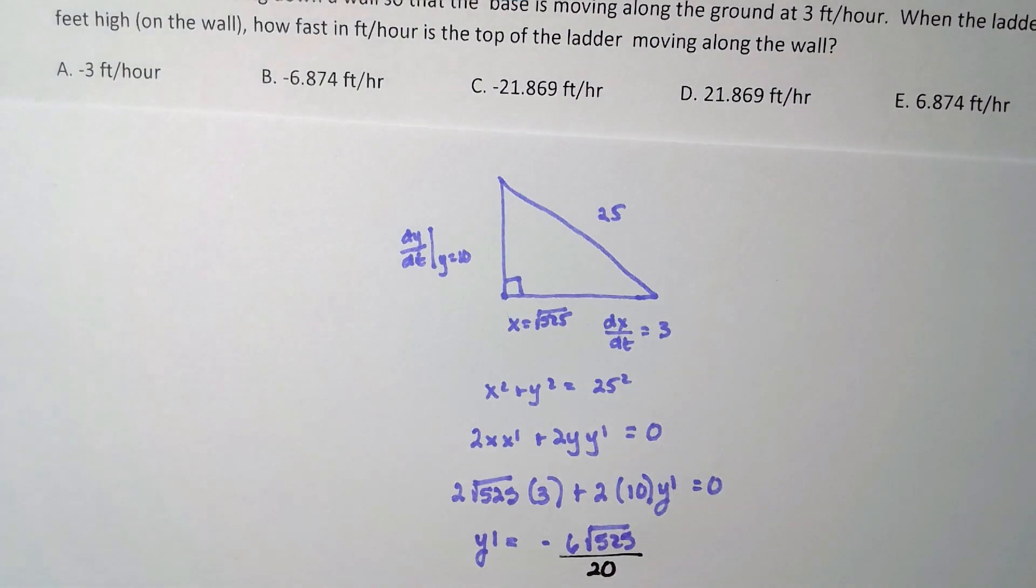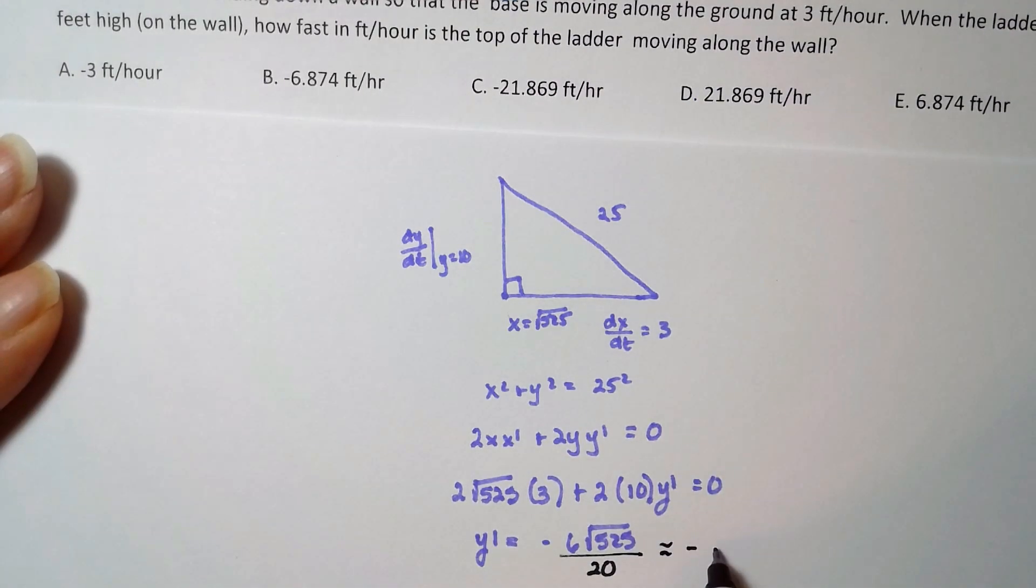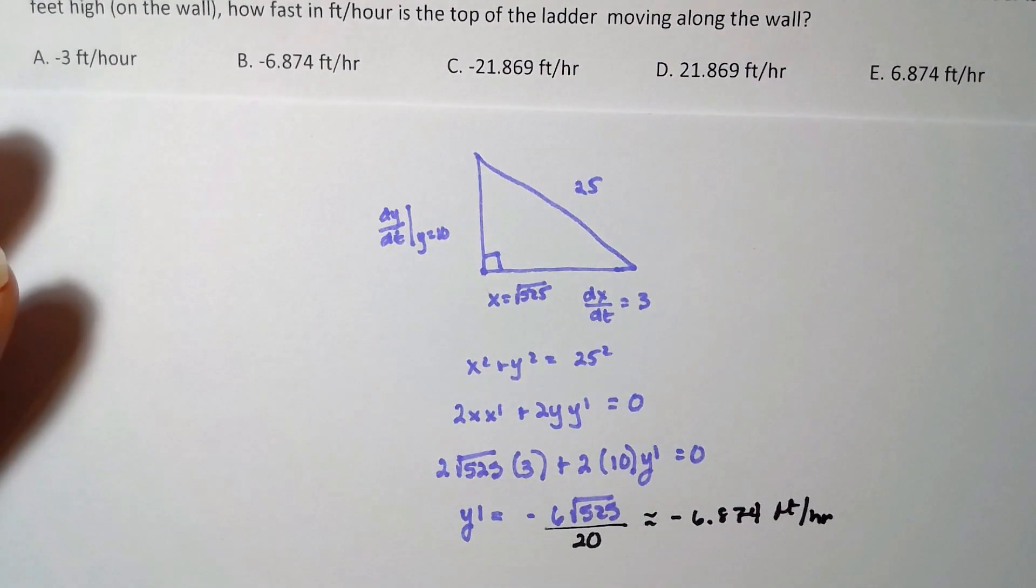Looks like I'm going to get negative 6.874, and that would be feet per hour. And that's it, so the answer would be B for that one.